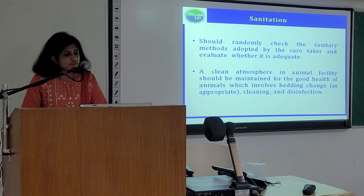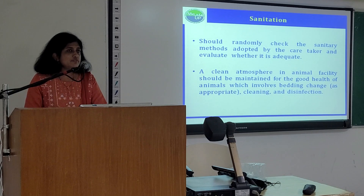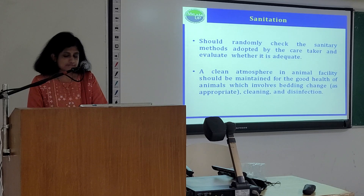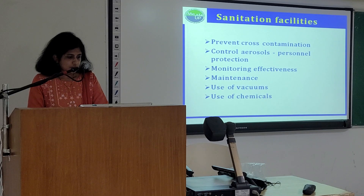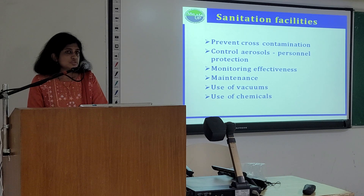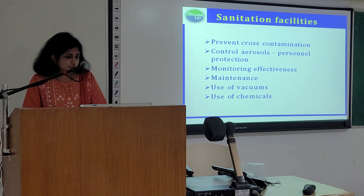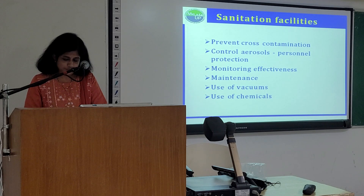Now we come to sanitation. One should randomly check the sanitary methods adopted by the caretaker and evaluate whether they are adequate. A clean atmosphere in animal facilities should be maintained for the good health of animals, which involves bedding changes as appropriate, cleaning and disinfection. The sanitation facilities should prevent cross-contamination, control aerosols, and provide personal protection. Monitoring the effectiveness of sanitation facilities is helpful in maintaining the health of animals. These facilities include use of vacuums, use of chemicals, etc.